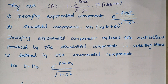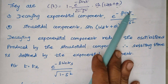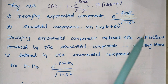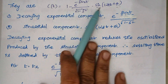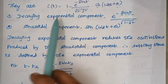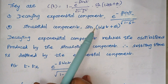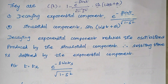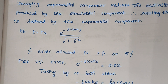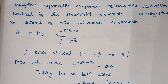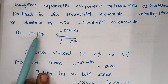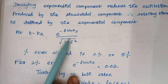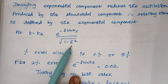Based upon this decaying exponential component we are going to calculate the settling time. We are considering this decaying exponential component alone. At t equal to t_s — since we are calculating settling time — we replace t with t_s. So the expression becomes e to the power minus zeta omega_n t_s, divided by root of 1 minus zeta squared.